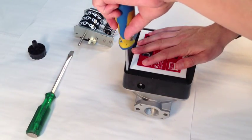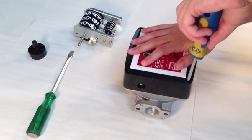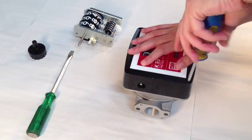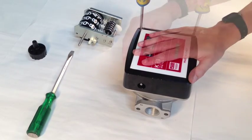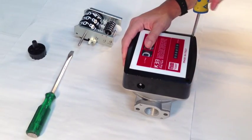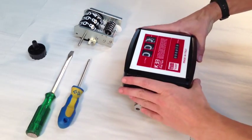Using the crosshead screwdriver, undo the four corner screws holding the cover to the body of the meter. When all four screws are undone, gently lift the cover away from the body of the meter.